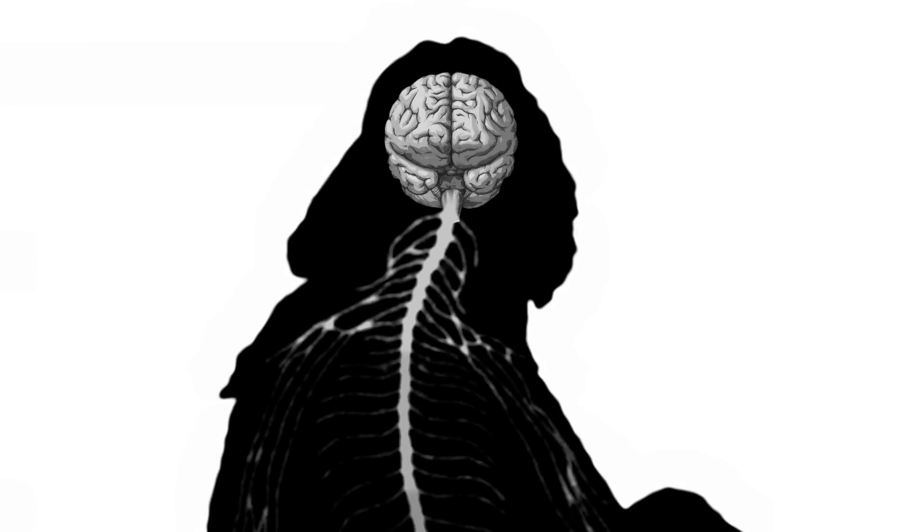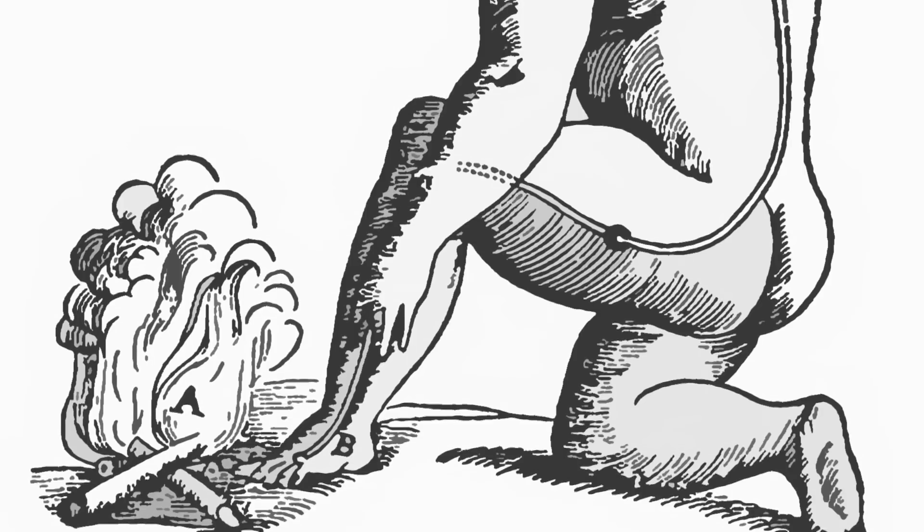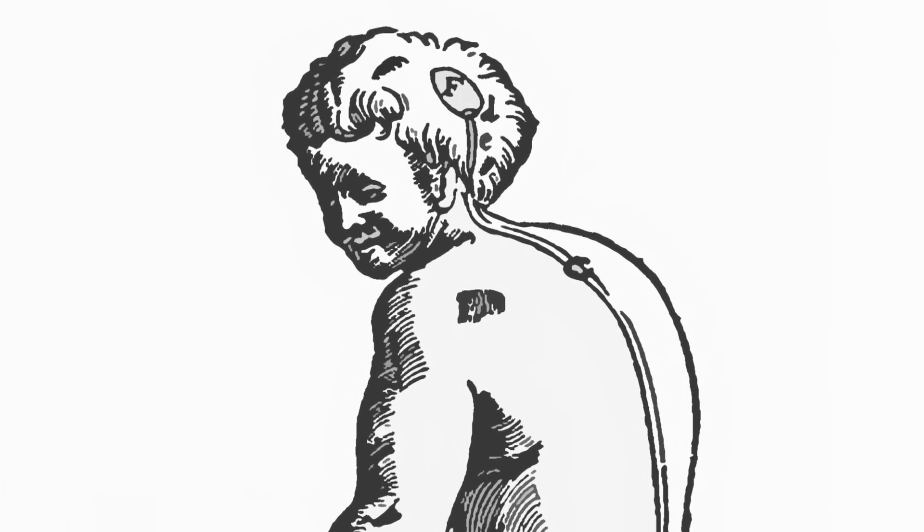In the 1600s, René Descartes proposed that the human brain and nervous system were an elaborate network of fluid-filled pipes which controlled the body. He was inspired by the hydraulic animated statues that delighted the nobility of Europe.